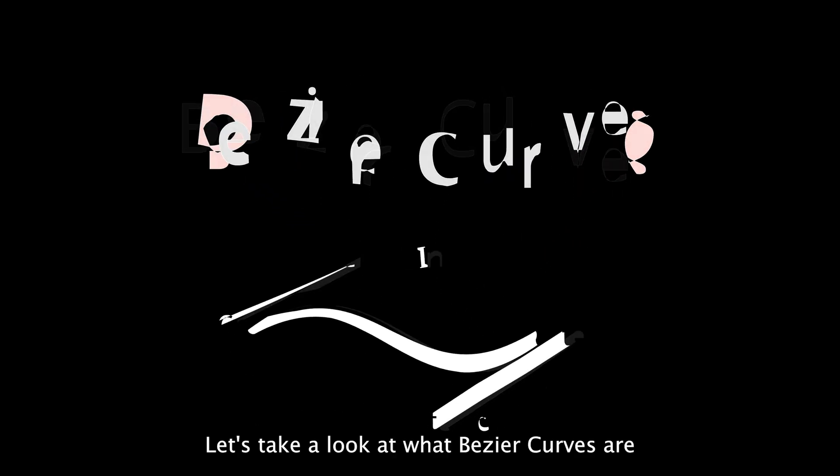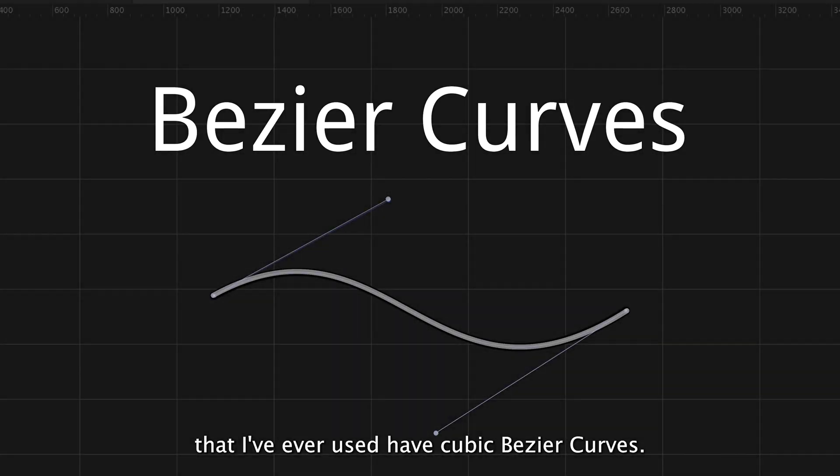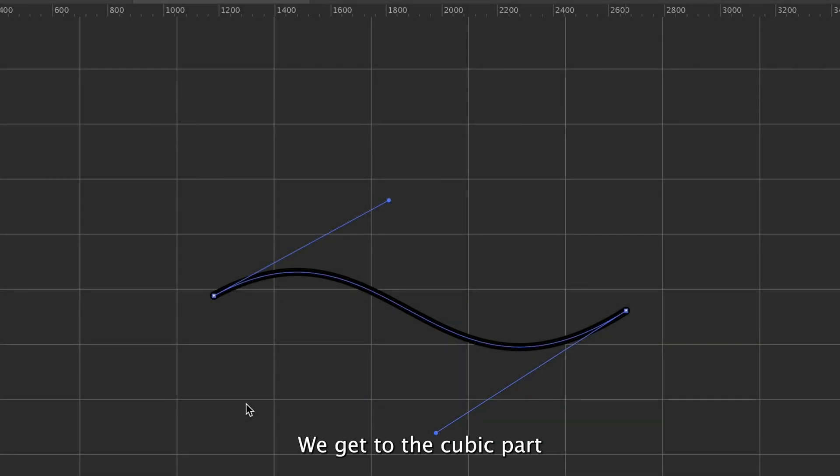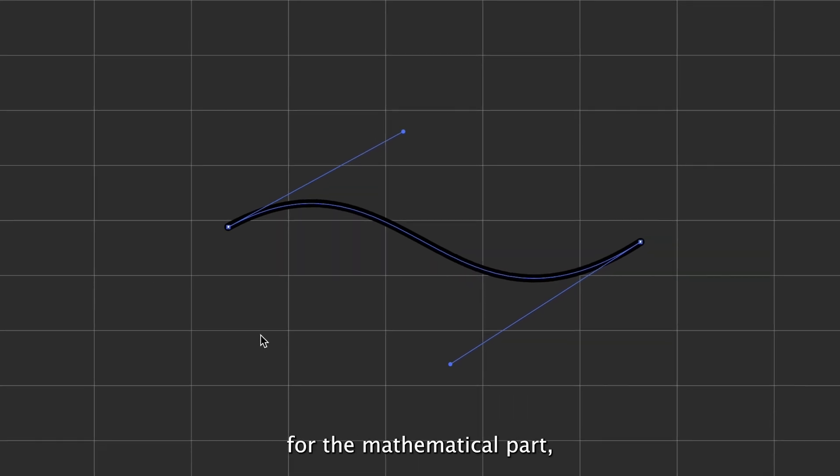Let's take a look at what Bézier Curves are. All the software tools that I've ever used have cubic Bézier Curves. We'd get to the cubic part in just a minute, but if you cannot wait for the mathematical part, the chapters are clearly marked. You can use the timeline to just skip ahead. Let's just see this example of a Bézier Curve.